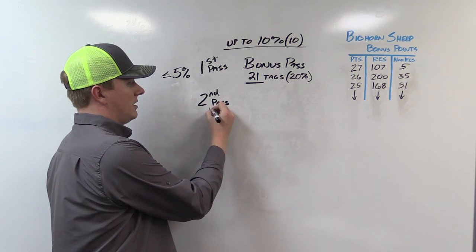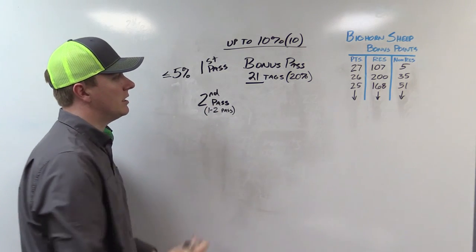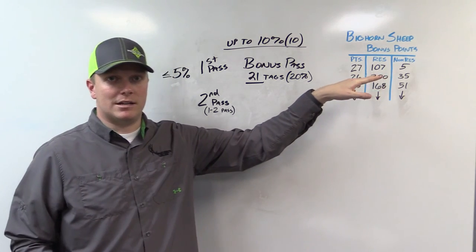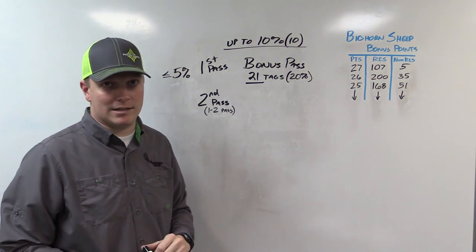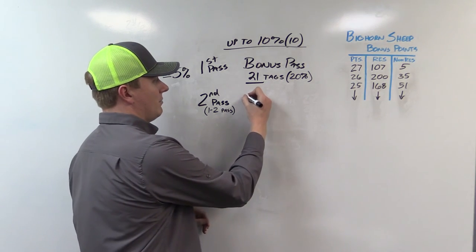The second pass is also called a one-two pass, meaning it looks at your first and second choice. So they give out these 21 tags in the bonus pass. They're going to residents mostly. Hopefully a non-resident gets lucky and draws a tag. Now they come down to us. This is our random pass.